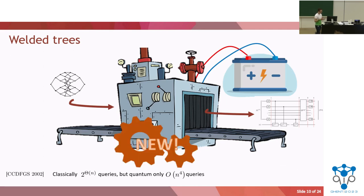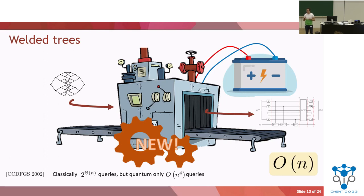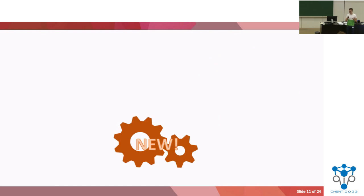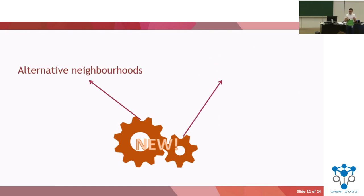In our work, we show that if you put the welded trees random walk through our machine, you can obtain a quantum algorithm that just traverses this graph linearly — finding t in just a linear number of queries. So even though we already knew there was an exponential speedup, we can now see that there may be a machine that can generalize these effects. We extend the Belloś framework in two main ways: alternative neighbourhoods and edge composition.